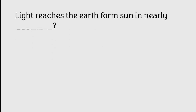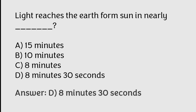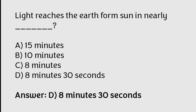Light reaches the earth from sun in nearly: 15 minutes, 10 minutes, 8 minutes, 8 minutes 30 seconds. The correct answer is Option D. Light reaches the earth from sun in nearly 8 minutes 30 seconds.